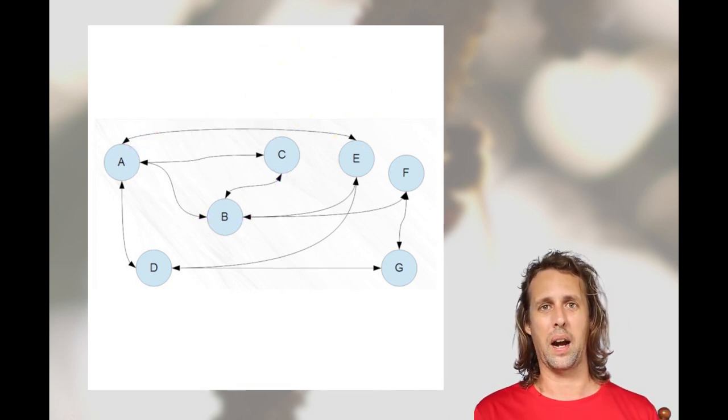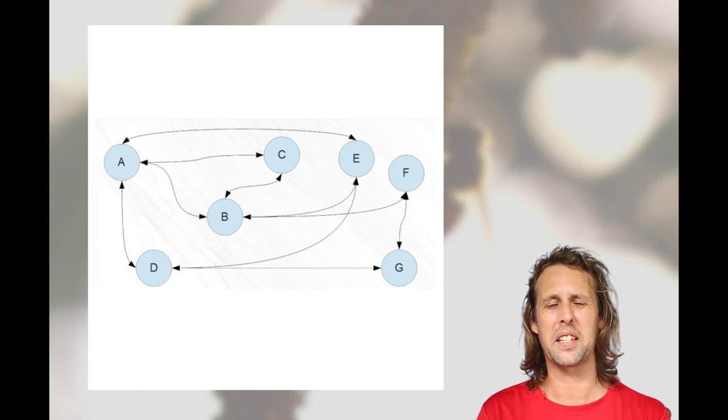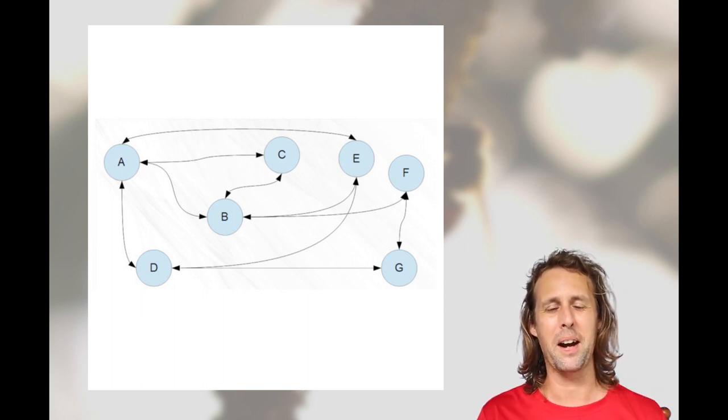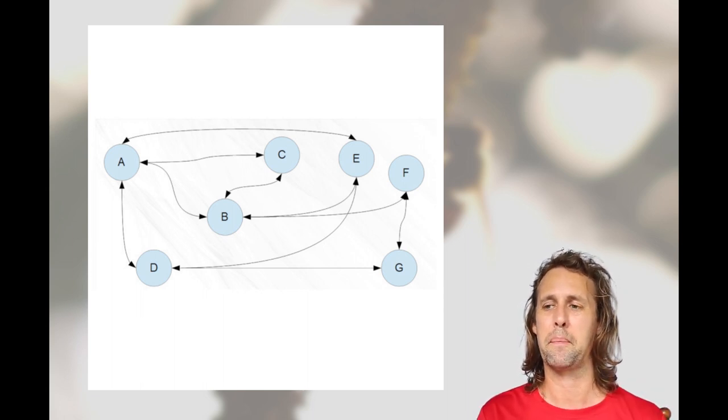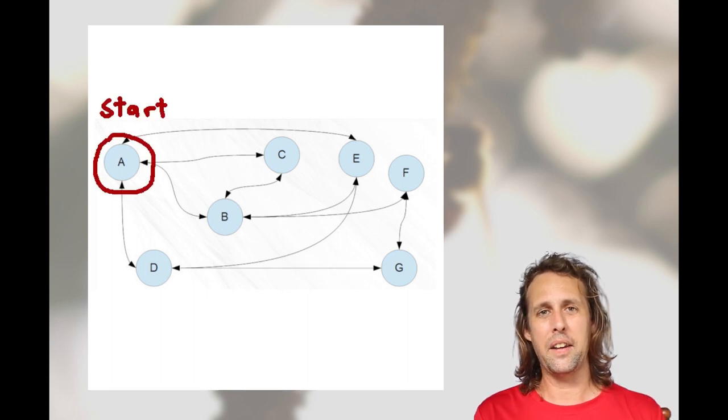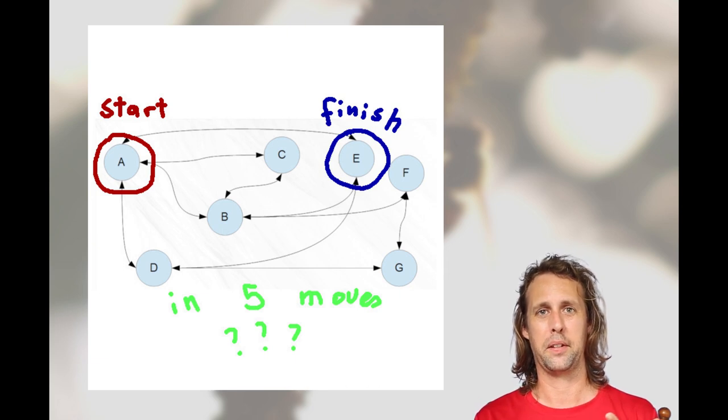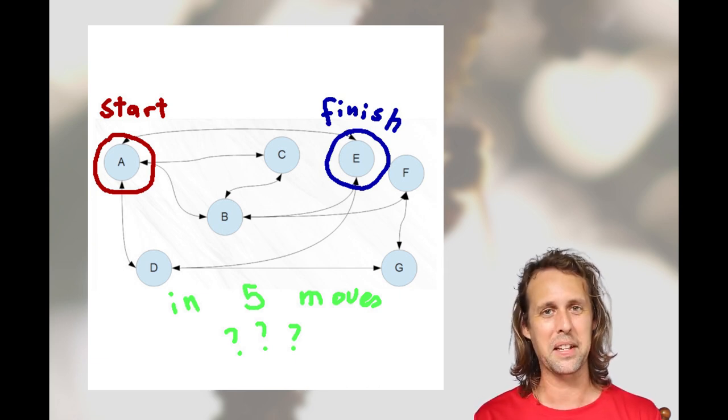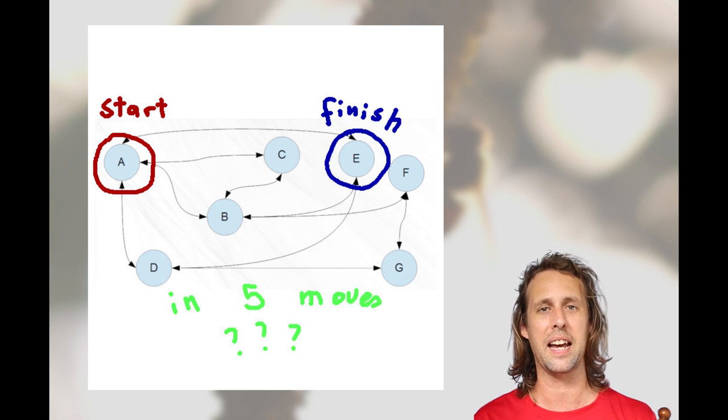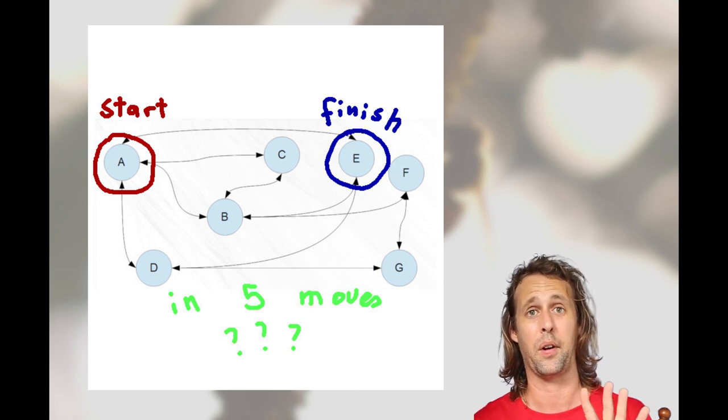Okay, so we've got ourselves a graph, connected nodes. And we might ask some interesting sorts of questions. We might ask questions such as, if you were at node A, could you get to node E in five moves? So granted that you can't stay in the same place for any move, could you start at node A and end at node E in five moves?